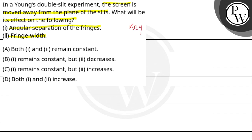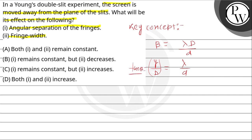The key concept here is that fringe width is given by λD/d, where d is the separation between the slits, capital D is the separation between the screen and the slits, and λ is the wavelength of light. For angular separation, y/D = λ/d, where y/D is actually tan θ, and θ is the angular separation of the fringes.